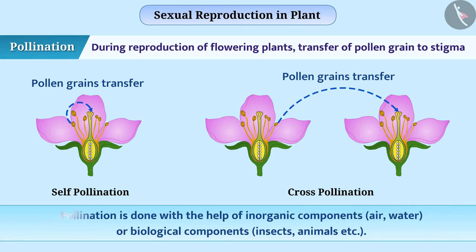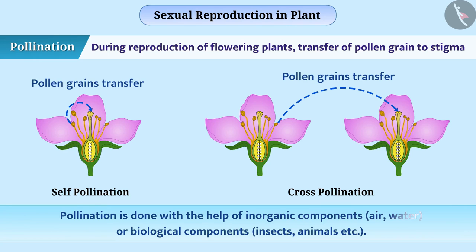Pollination is done with the help of inorganic components such as air, water, or biological components such as insects, animals, etc.